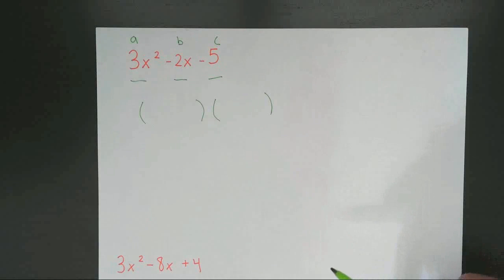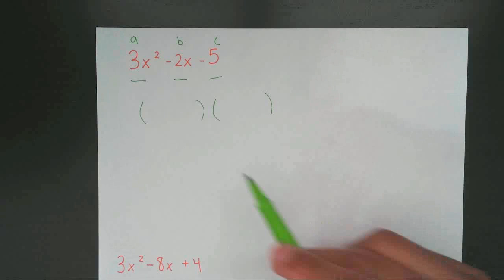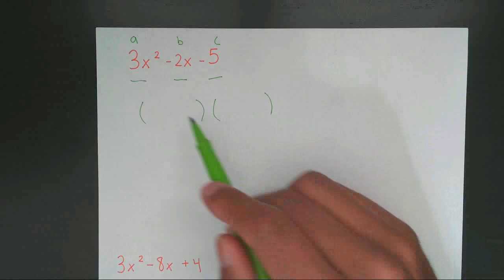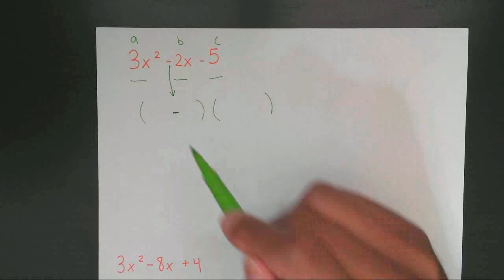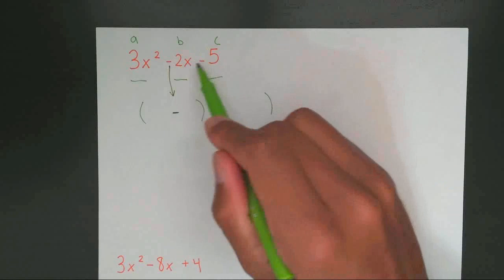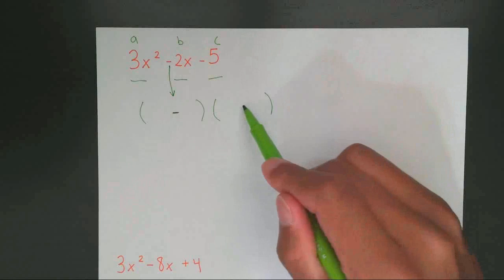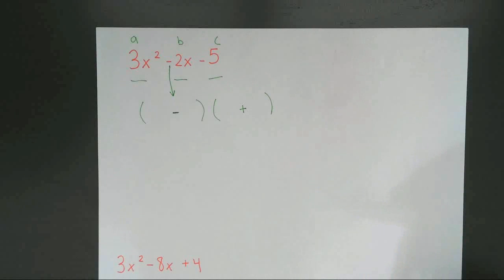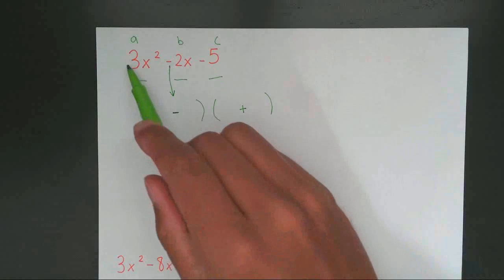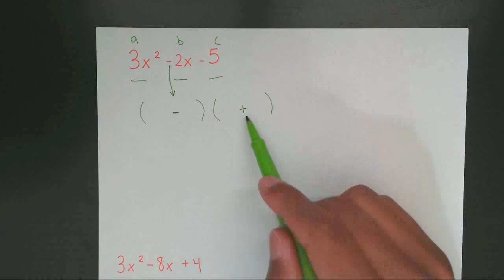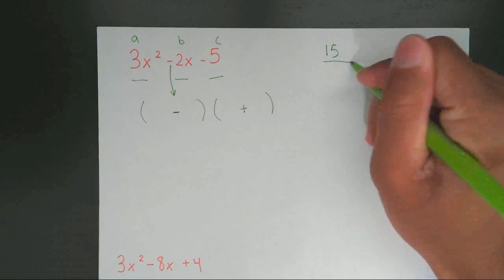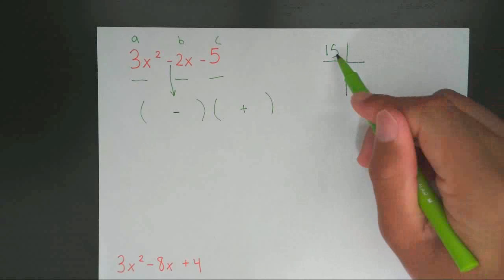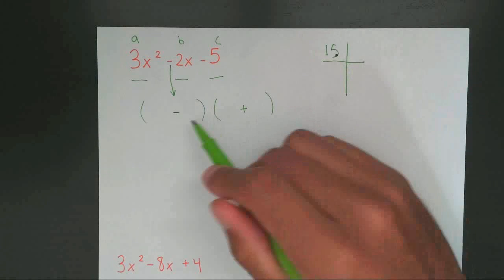But if you watch my previous videos the first thing we ever focus on is the signs. We want to be able to figure out what signs are going to go in these parentheses. And we said that the first thing you do is you're going to drop this first sign. Make this a negative. Multiply these two signs. That gives you a positive. Now what you do when this type of problem is you're going to multiply a times c. Don't worry about the signs because we already have them figured out. Just multiply 3 times 5. That's going to give you 15. Now I'm going to create this chart.